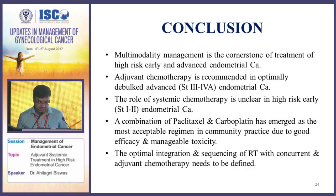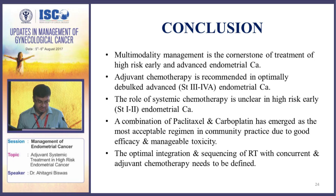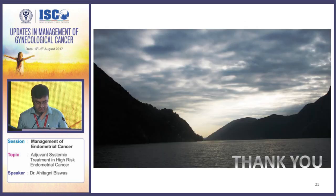To conclude: multimodality management is the cornerstone of treatment for high-risk early and advanced endometrial cancer. Adjuvant chemotherapy is strongly recommended in optimally debulked advanced endometrial cancer, but the role of systemic chemotherapy is unclear in high-risk early endometrial cancer. A combination of paclitaxel and carboplatin has emerged as the most acceptable regimen in community practice due to good efficacy and manageable toxicity profile. The optimal integration and sequencing of radiotherapy with concurrent and adjuvant chemotherapy needs to be defined and refined in the near future. Thank you very much for your kind attention.